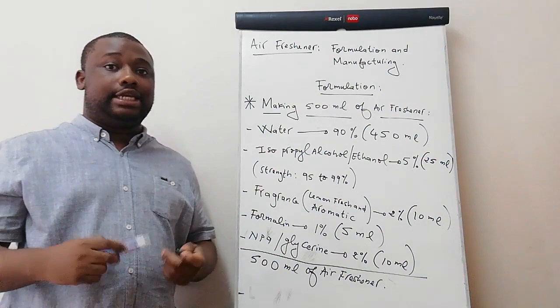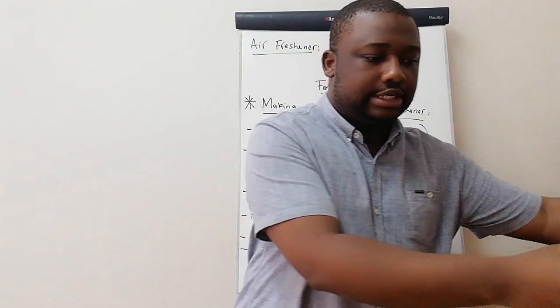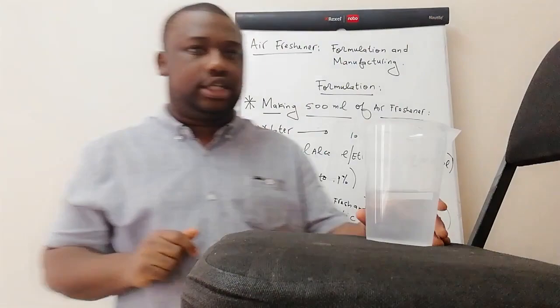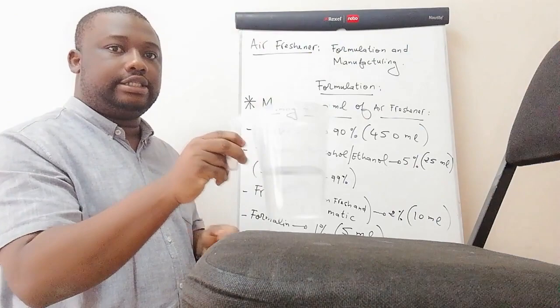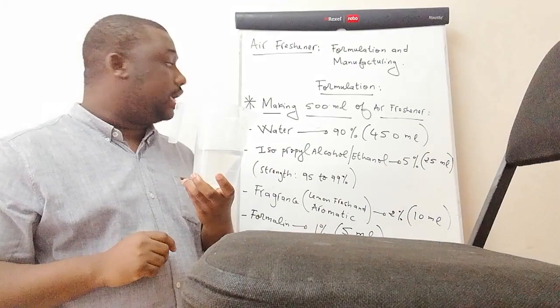Knowing all this, we can get to our manufacturing process. We have all the details and ingredients available. I'll bring the support close to show you how I'm going to mix the ingredients. Our first ingredient is water — water should be 450 mils. I've already measured my 450 mils of water, which is here.